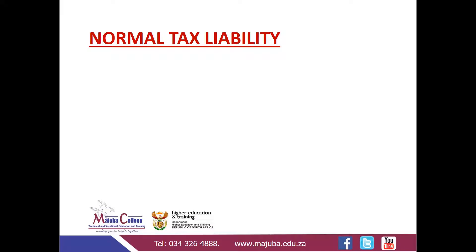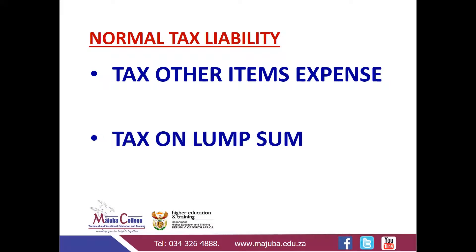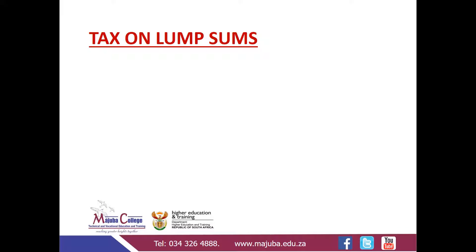In Part 7, I'm going to calculate the total normal tax liability. The total normal tax liability of a taxpayer is made up of tax arising from other items and tax arising from lump sums. I'm referring to 'other items' to draw a clear distinction between items such as salaries, interest received, dividends received, and other income items, from income arising from retirement lump sums or severance benefit. In this presentation, I'm going to solely focus on tax on lump sums, as I've already calculated the tax on other items in Part 6.